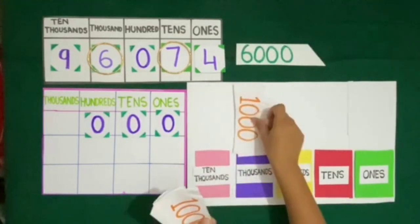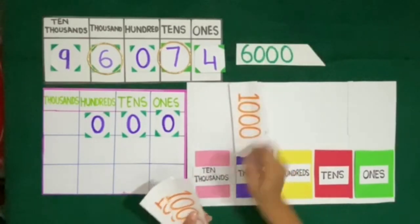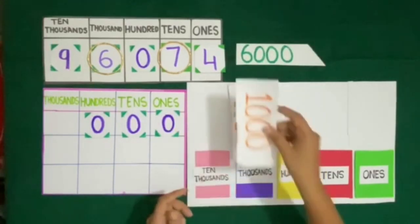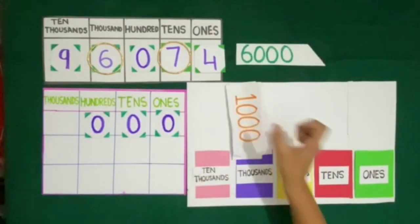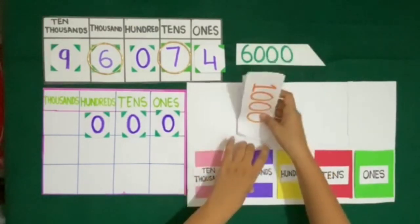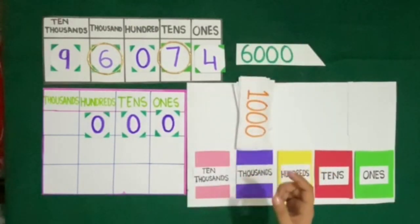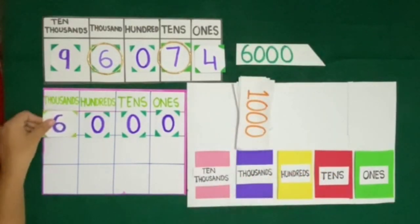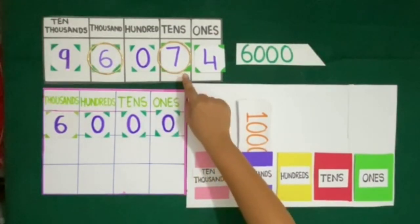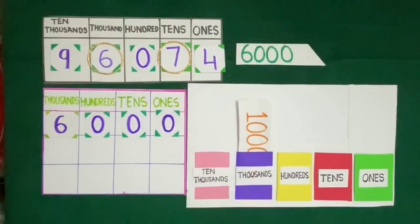So we count: 1000, 2000, 3000, 4000, 5000, 6000. So we will place 6 at the 1000's place. The place value of 7 is 70.